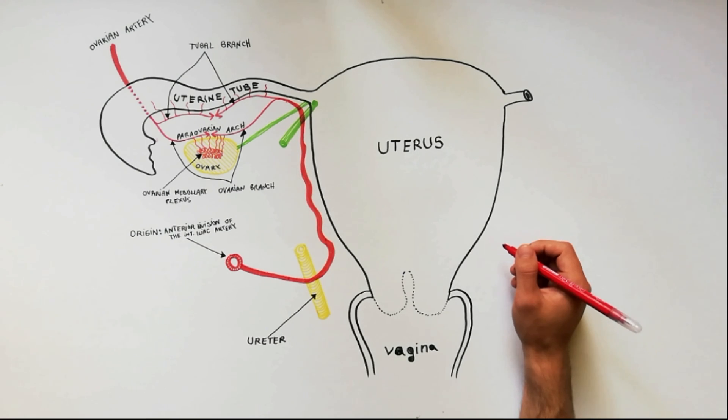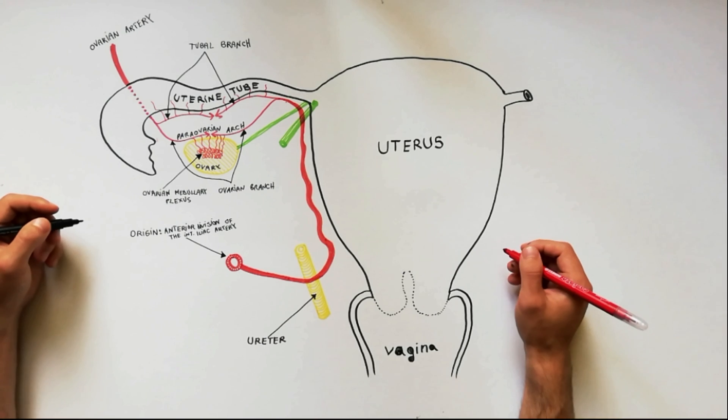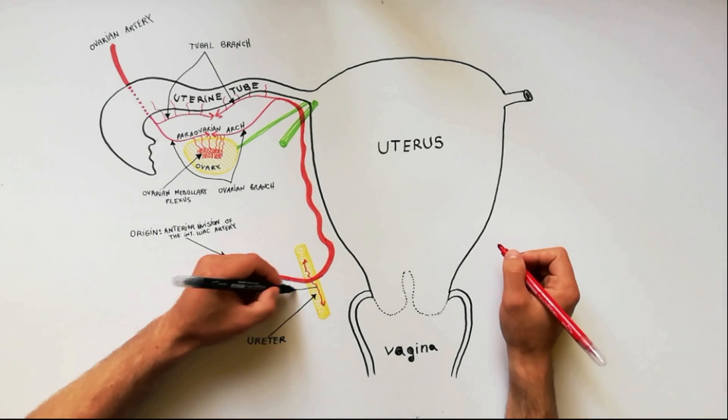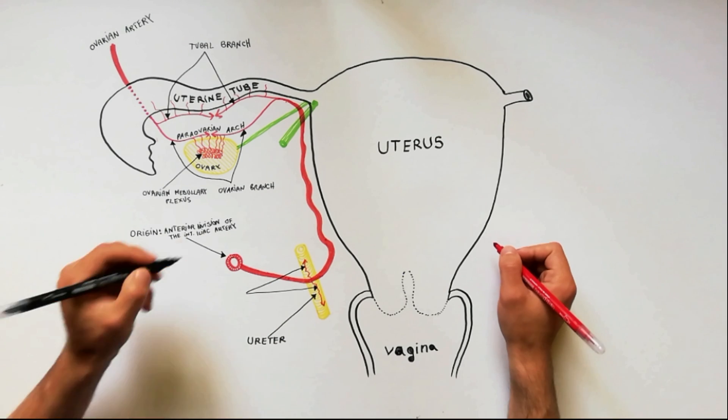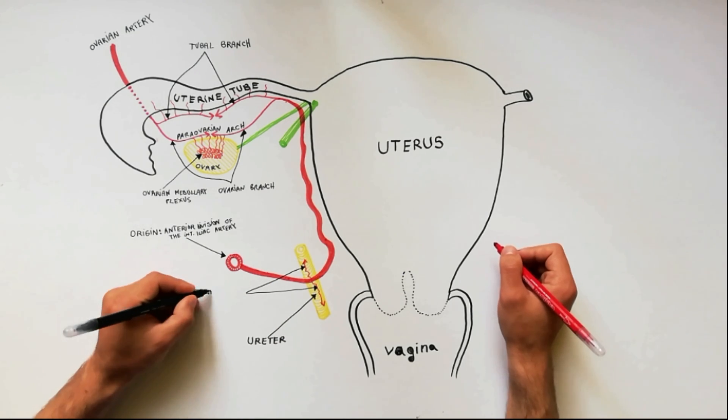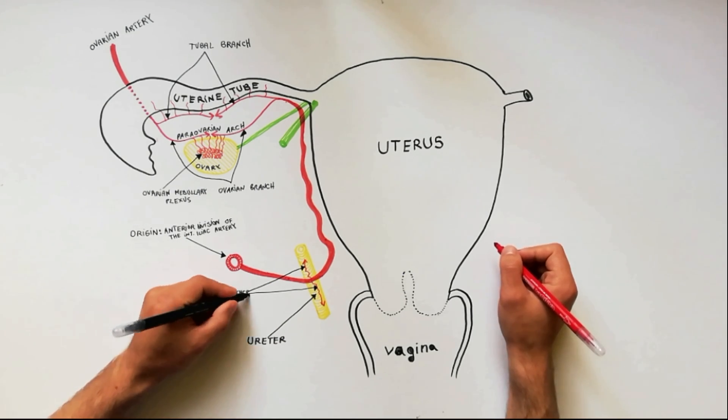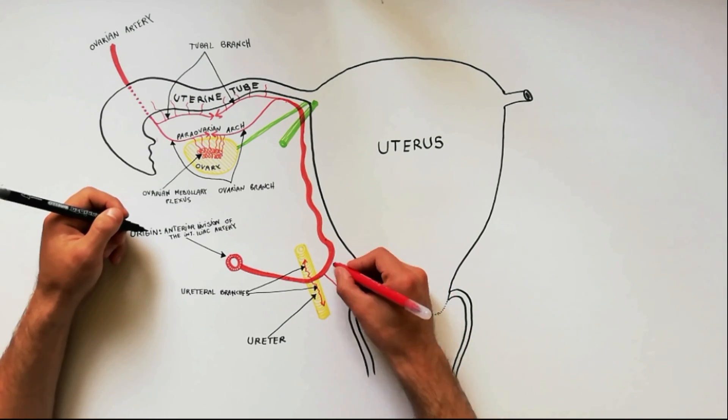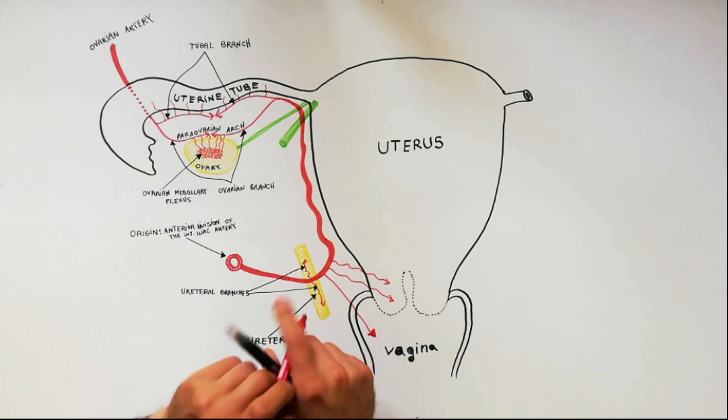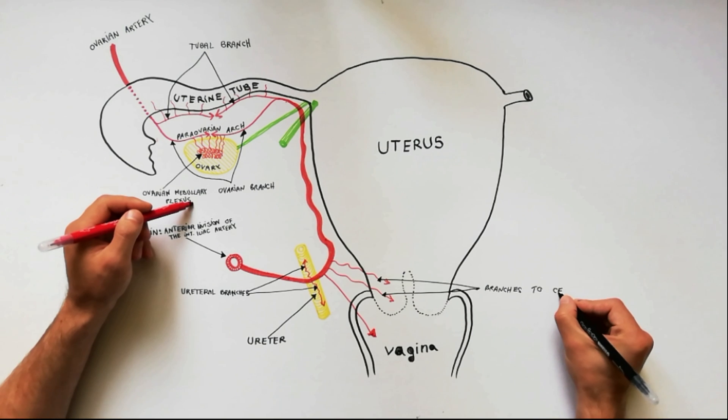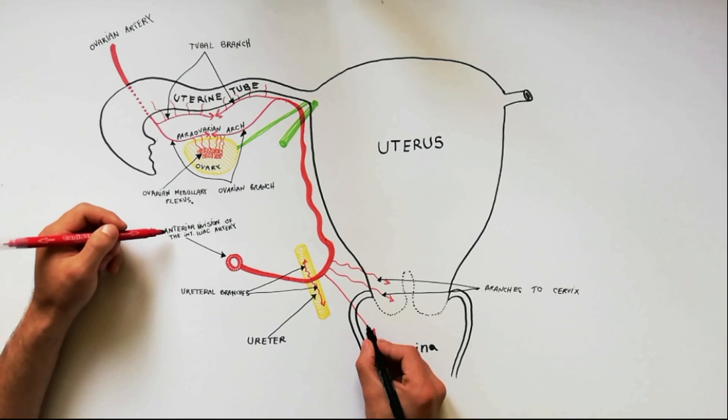Now let's indicate branches from the uterine artery apart from the two terminal ones. Ureteral branches arise as the uterine artery crosses the ureter anteriorly. Close to the cervix and the lateral fornices of vagina are arising the vaginal branch and branches to cervix.